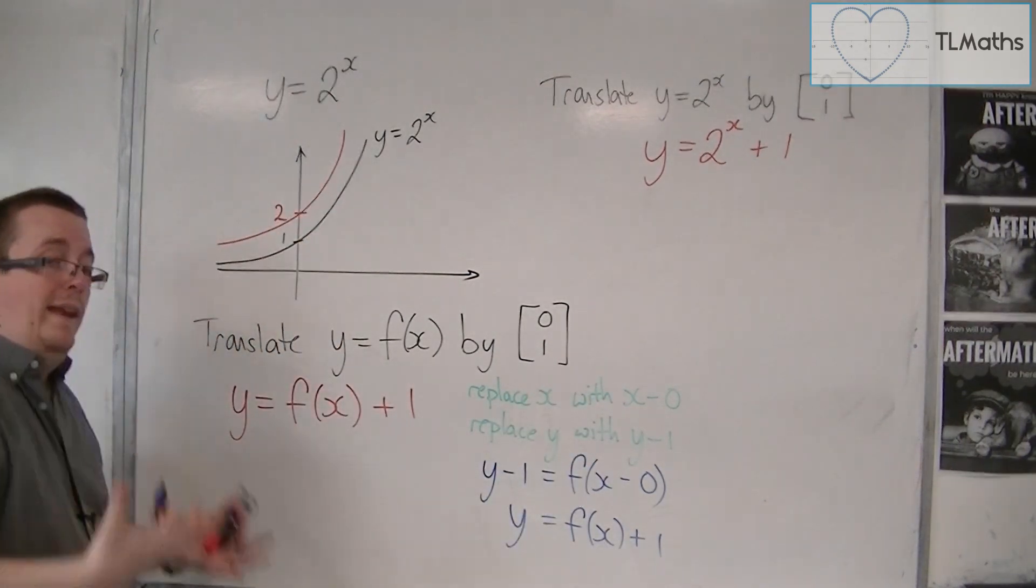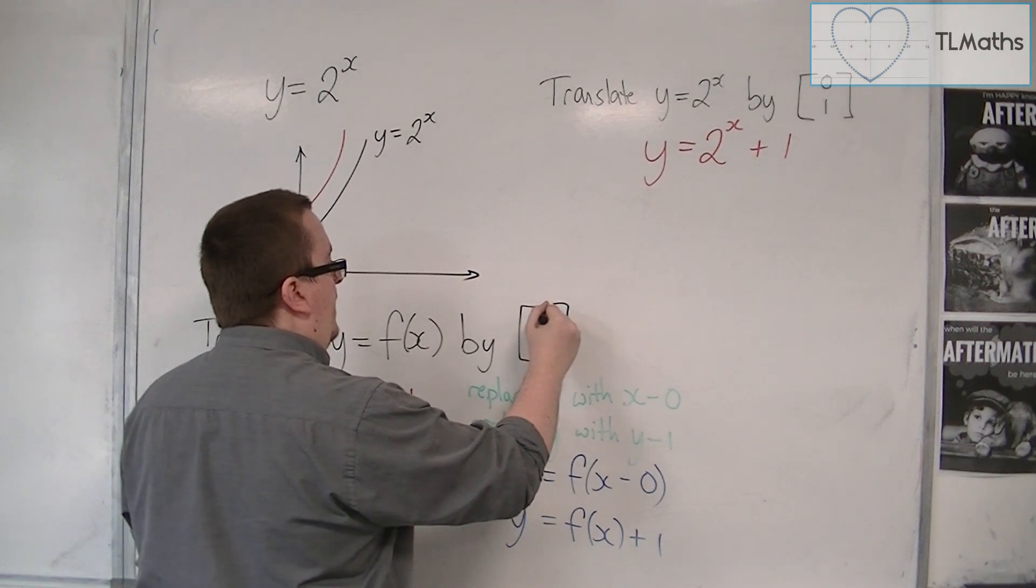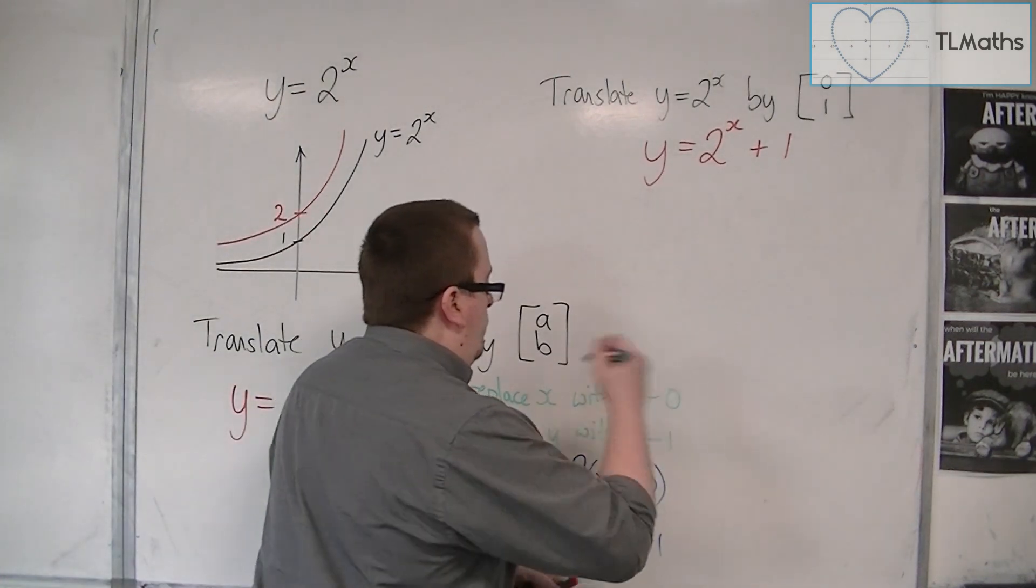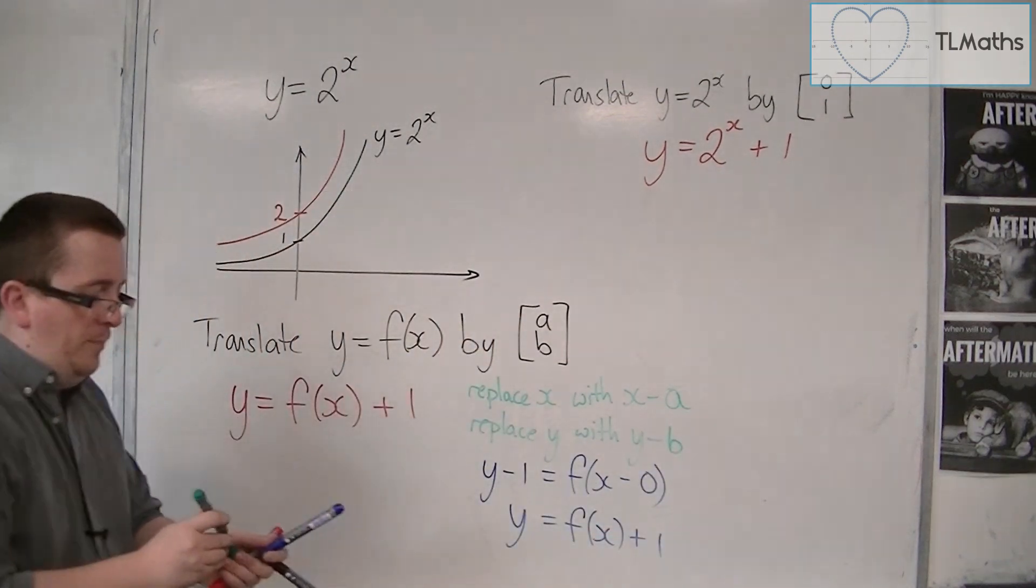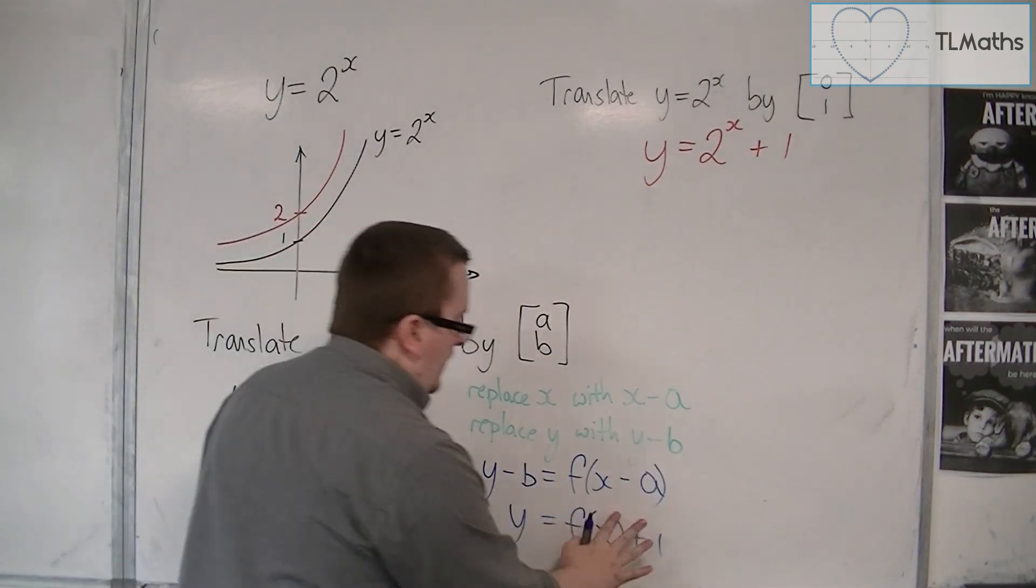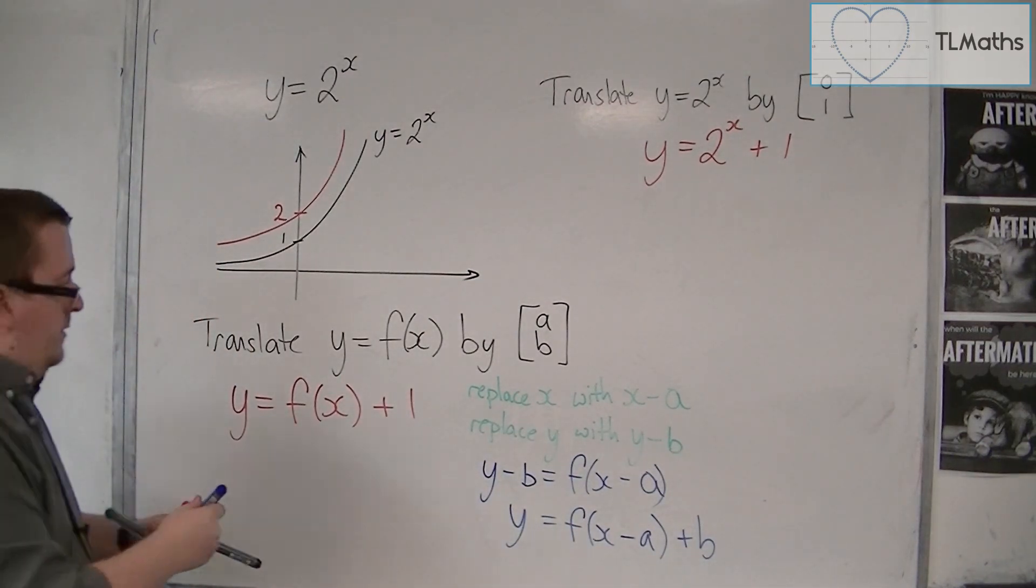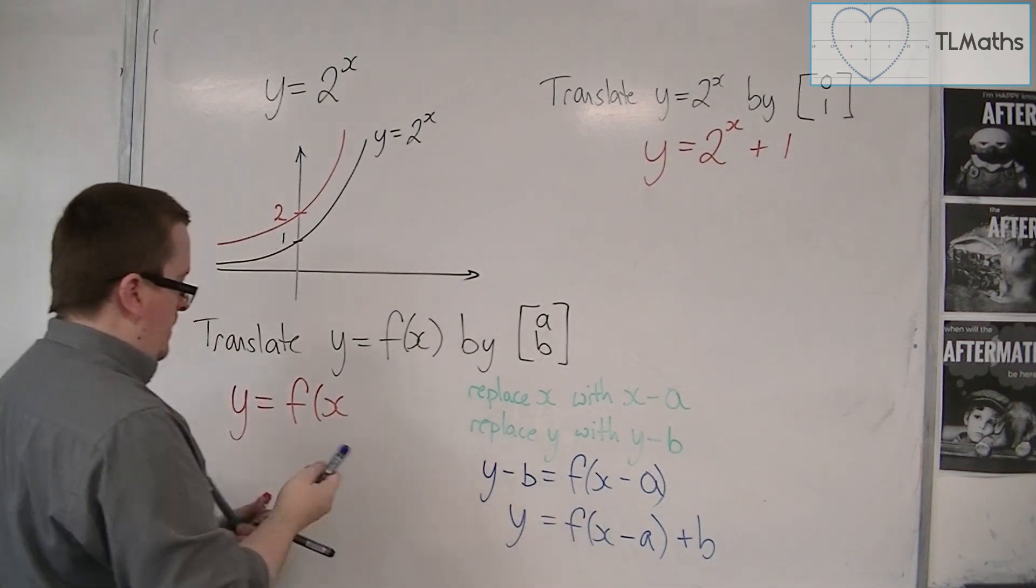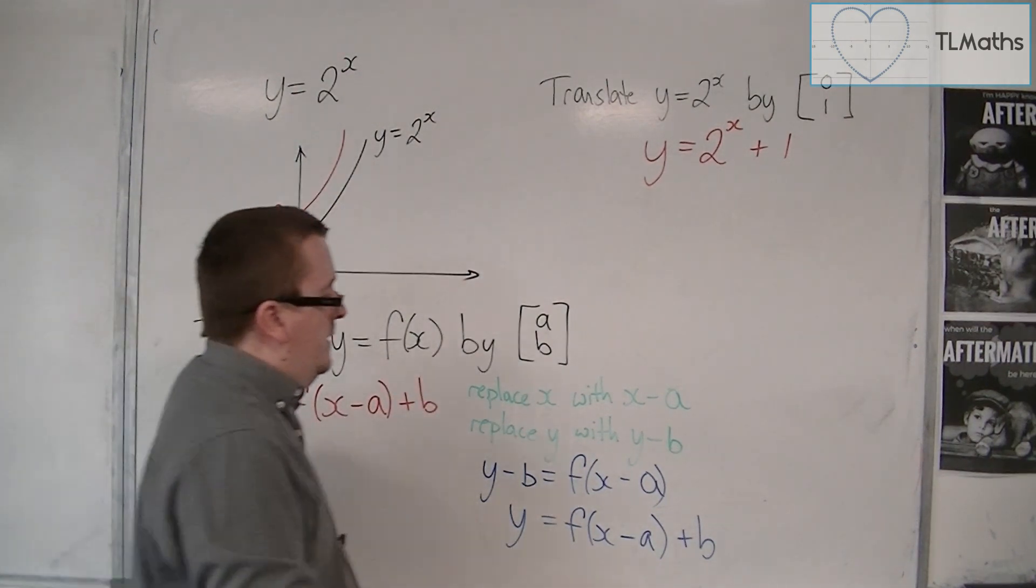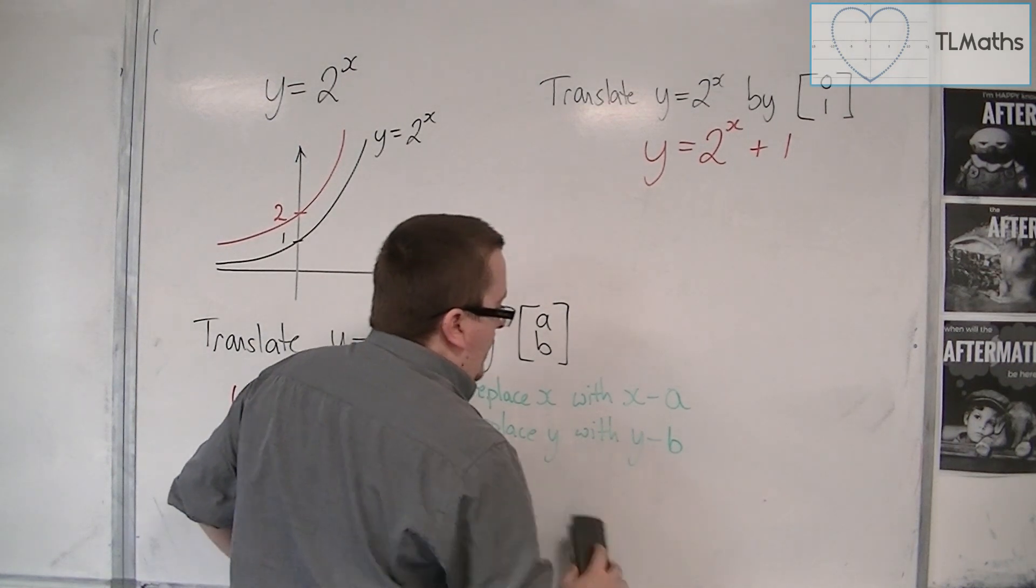So, this is a general rule that will allow us to translate a curve. So, if I write this in more general terms, so if we now think of this as the vector a, b, then I'm replacing the x with x minus a and the y with y minus b. So, I'm going to have y minus b equals f of x minus a. And so, I would have f of x minus a plus b by adding b to both sides. So our general format here is f of x minus a plus b. And this is the general bit of how that process works, and that works for every example.